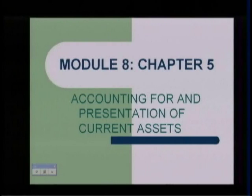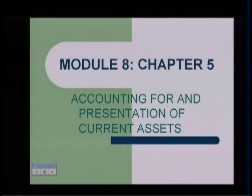Welcome back to module 8. We're going to start on chapter 5 with module 8 and continue through module 9 and module 10, doing different pieces of the chapter. The chapter covers all the current assets, but in this module we're going to look at cash and short-term securities. If you look in your book on page 138, they have a balance sheet with highlighted current assets — the first two items listed are cash and cash equivalents and short-term marketable securities, which are our two topics for this module.